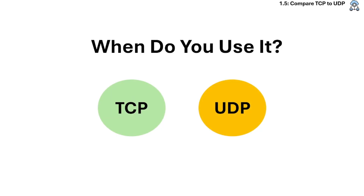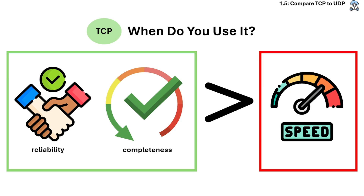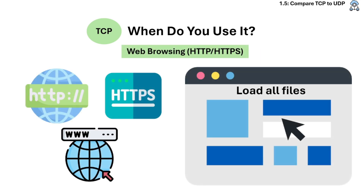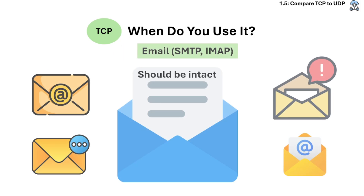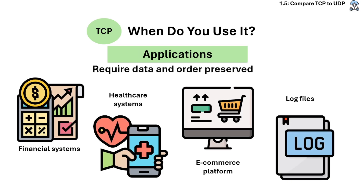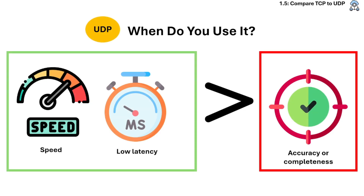So when do we use TCP versus UDP? We use TCP if we need reliability and completeness over speed. It is used for web browsing, where the browser needs all files to load completely and in order; for email, where messages must arrive reliably and intact; for file transfer, where data integrity and order matter during download or upload; and for any applications that require all data and order preserved. We use UDP if we need speed and low latency over accuracy or completeness.